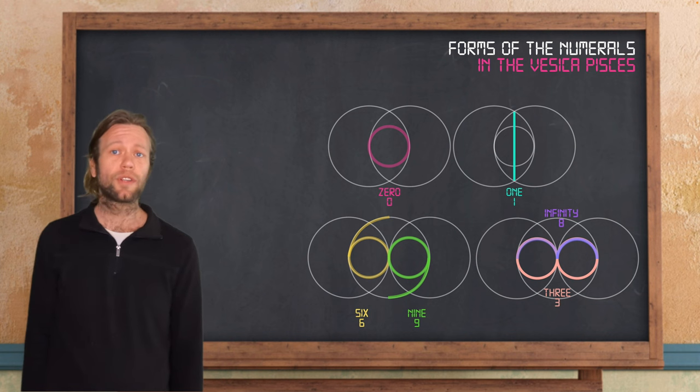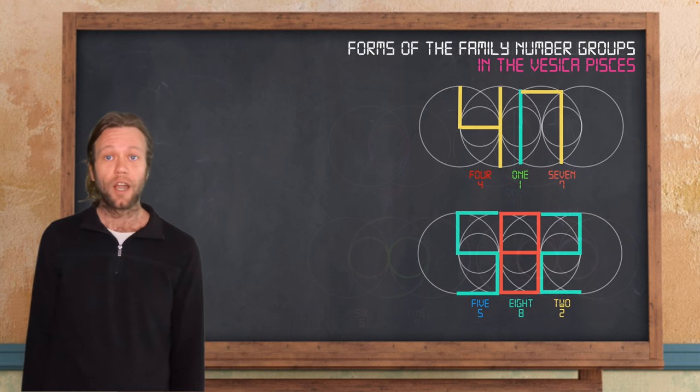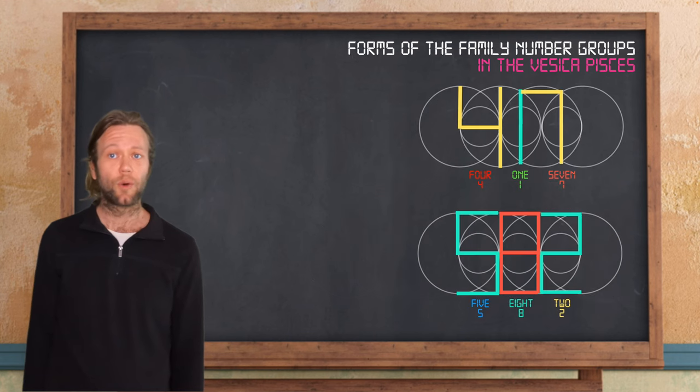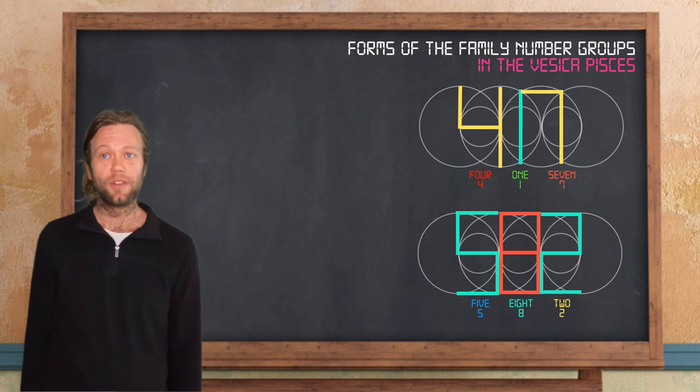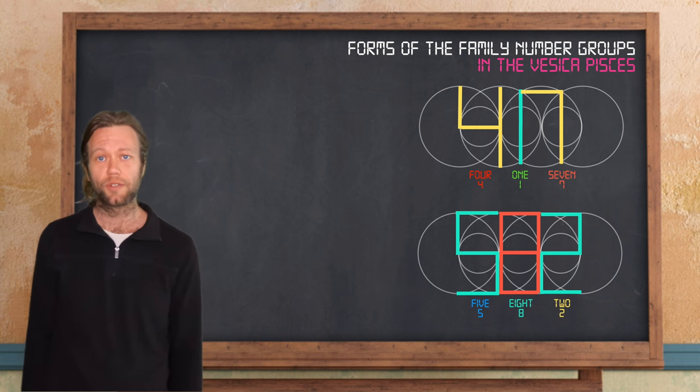For example, you'll see shortly that perceiving the numeral 1 to function as a mirror plane, as it's shown here, rather than just an arbitrary symbol, opens up a whole new world of possibilities. And here I show the 0, the 1, and the family number group 3, 9, and 6, as well as the infinity 8 symbol found in the Vesica Pisces. I show the other family number groups in the square or digital form here. It will again be apparent why I find the symbolism in this form significant, particularly of the family number group 2, 8, and 5, when we delve into the functions of the forms shortly.